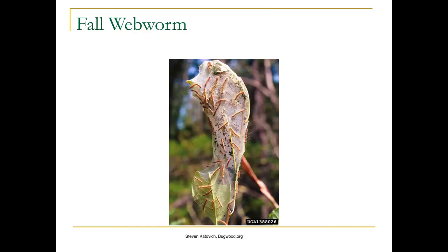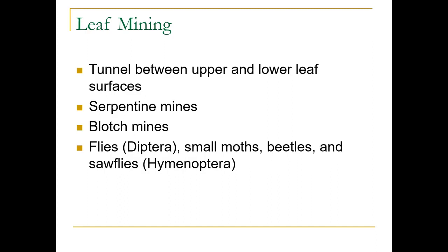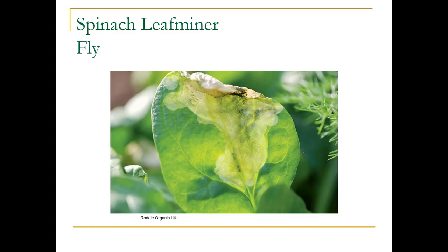Here we've got some aphids, and those little white things are the cast skins from aphids. Here's the tent from fall webworm, and here's the tent from tent caterpillar — you can see the black pellets inside, which are fecal matter. Leaf mining is when insects tunnel between the upper and lower leaf surfaces. You'll see serpentine mines or blotch mines, caused by true flies, small moths, beetles, and sawflies — and these are plant-specific.